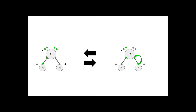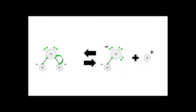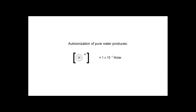Sometimes the oxygen atom goes so far as to grab both of the electrons from its covalent bonds with the hydrogen atom. This leaves the hydrogen without its electron — it only has a proton, which gives it a positive charge. So this reaction creates a hydroxide ion and a hydrogen ion. The concentration of hydrogen ions produced by auto-ionization in pure water is 1 times 10 to the negative 7 molar. Solutions are classified as either an acid or a base based on their hydrogen ion concentration relative to pure water.